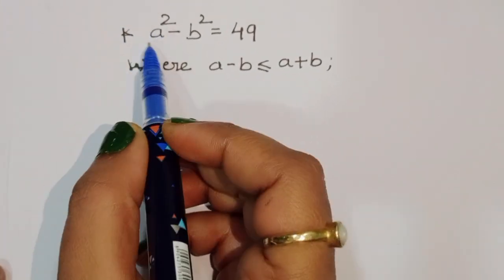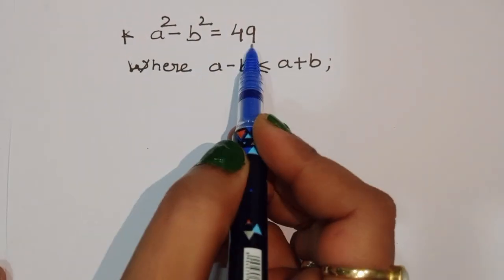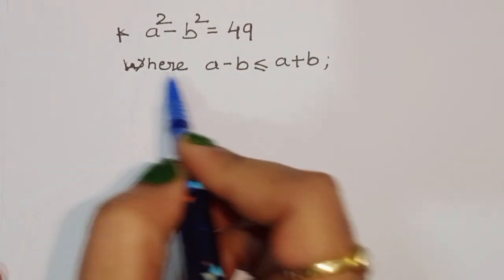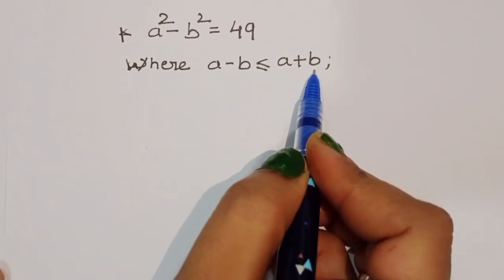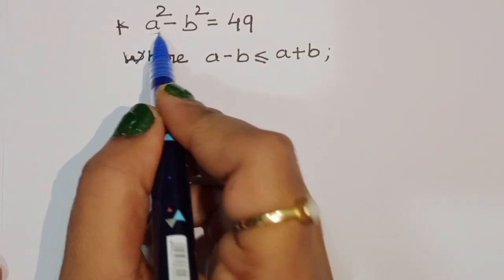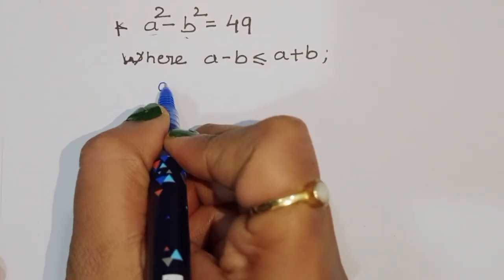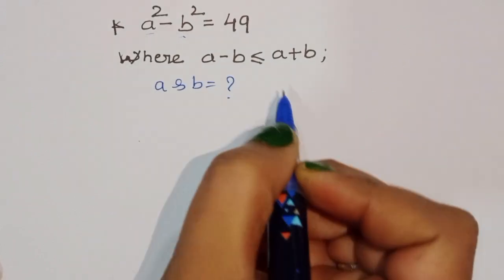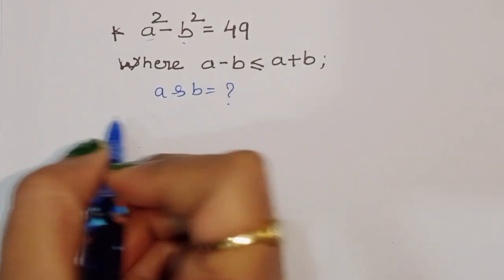The question is: given a squared minus b squared is equal to 49, where the condition is a minus b is less than or equal to a plus b. We have to find out the value of a and b. Let's see the solution.